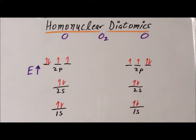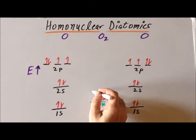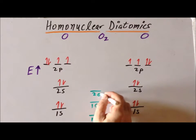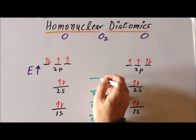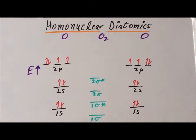The 1s orbitals on each oxygen atom overlap to form a lower-energy bonding combination, which we call sigma 1s, and a higher-energy anti-bonding combination, which we call sigma 1s star. Similarly, the 2s orbitals on each oxygen atom will overlap constructively to form a lower-energy bonding combination, which we denote 2 sigma, and an anti-bonding destructive interference, higher-energy anti-bonding orbital, which we denote as 2 sigma star.